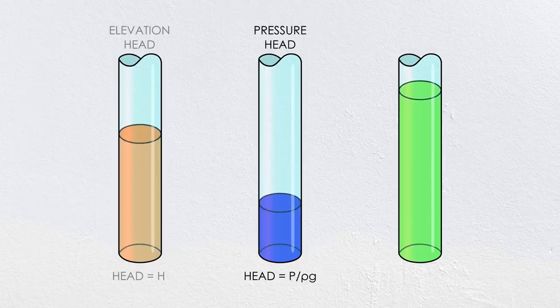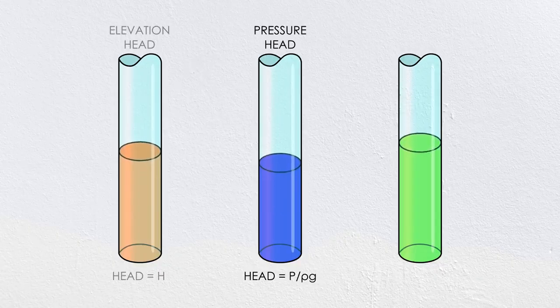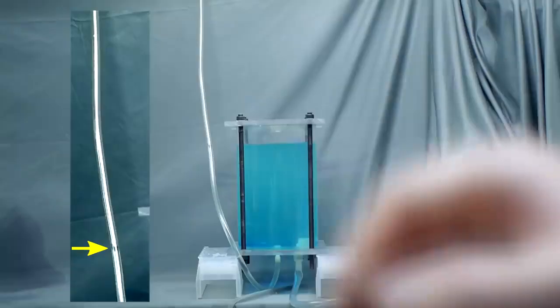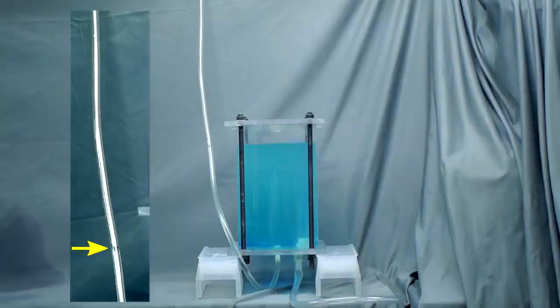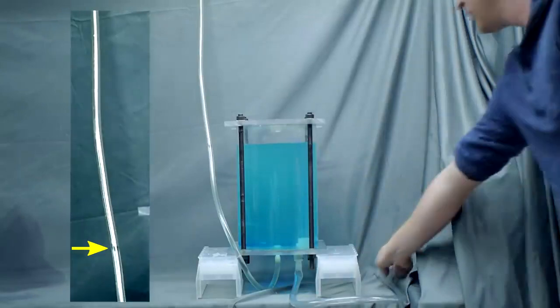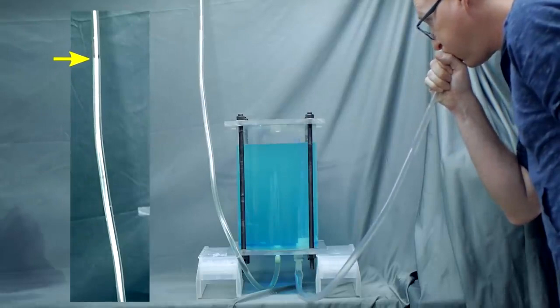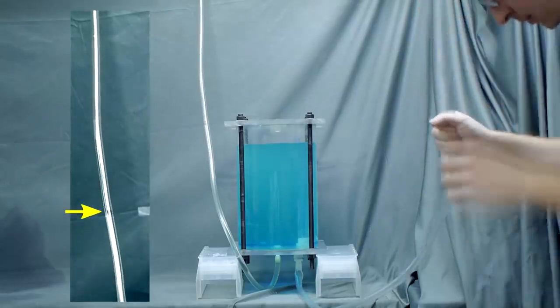The second type of energy is pressure head. In this case the head is the pressure divided by the gravity times the density of the fluid. So if I close off the top of my tank and add some air pressure, the level in the tube goes up. The new height is the pressure head, the equivalent static column related to the pressure in the tank.